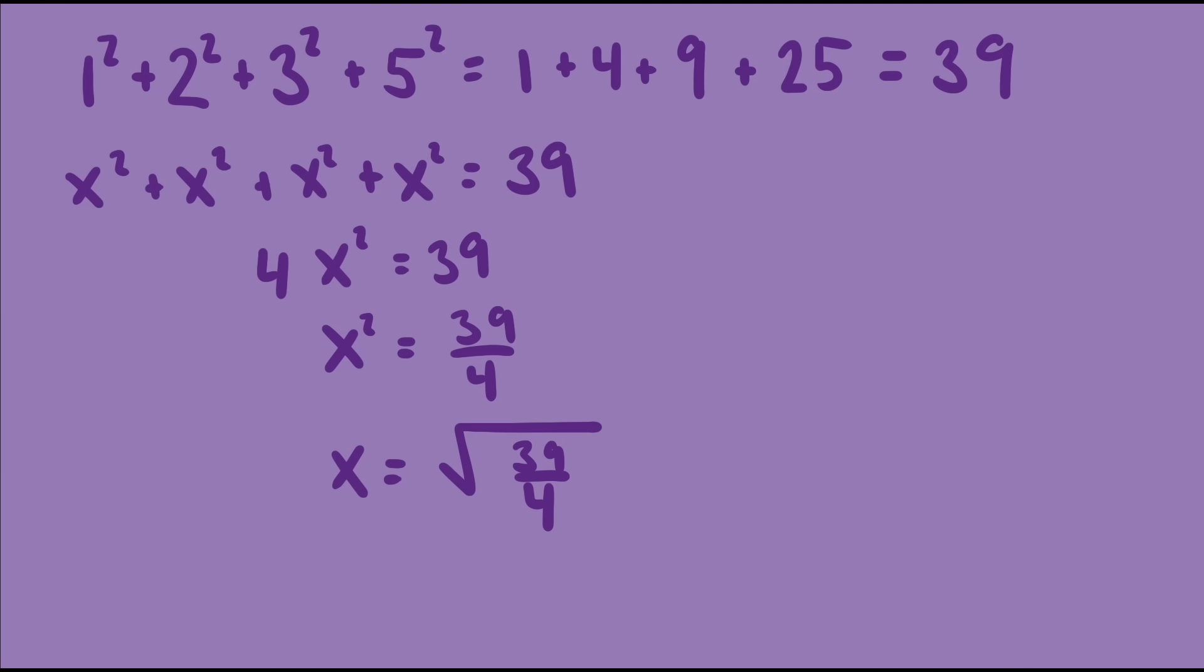So with our initial values of 1, 2, 3, and 5, we get a mean of 3.12. We could derive a formula for this mean, and we could give the mean a name. Well, actually, it already has a name. It's called the root mean square.